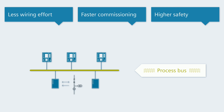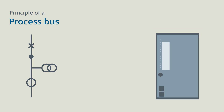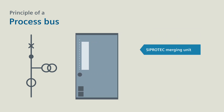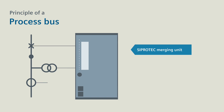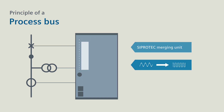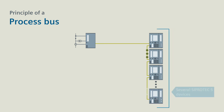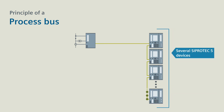In principle, everything is quite simple. For a process bus, you first of all need a CProtek merging unit, which you place close to the instrument transformers and switching devices and connect it to them. The merging unit digitalizes the analog values of the transformers and then sends them via a fiber optic cable to one or more protection devices.